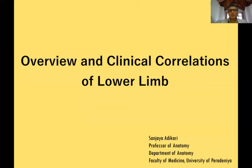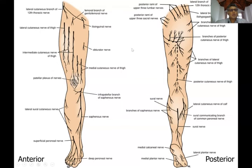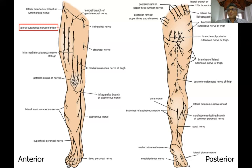This is the overview and clinical correlations of the lower limb. Even though you don't have to know all the cutaneous nerves supplying the skin of the lower limb, certain cutaneous nerves are clinically important. You don't have to know the names of all these cutaneous nerves, but certain ones are important. One such nerve, starting from the upper end, is the lateral cutaneous nerve of the thigh, also called the lateral femoral cutaneous nerve.